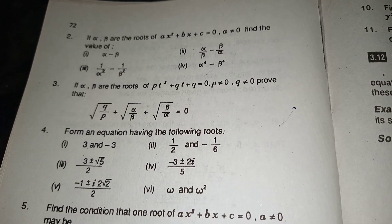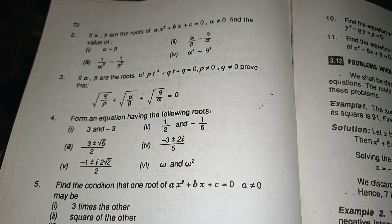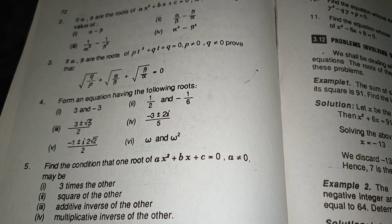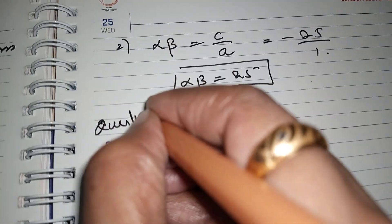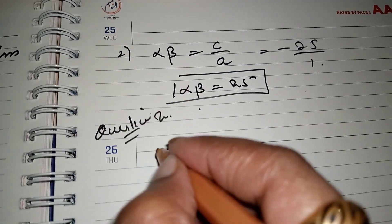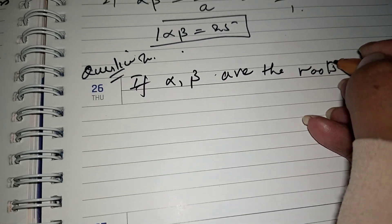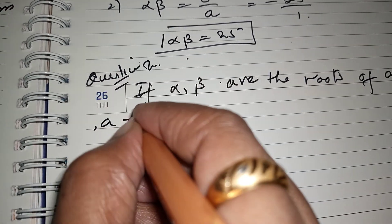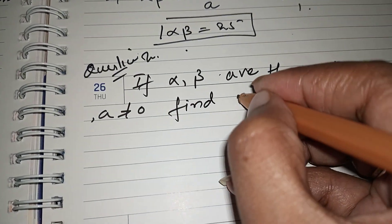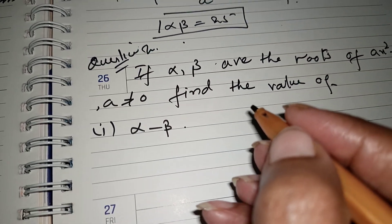Question number 2 of Exercise 3.6: if alpha and beta are the roots of the quadratic equation ax squared plus bx plus c equals 0, where a is not equal to 0, find the value of alpha minus beta. To solve this, we use the algebraic identities in the form of (a plus b) whole square and a squared minus b squared.